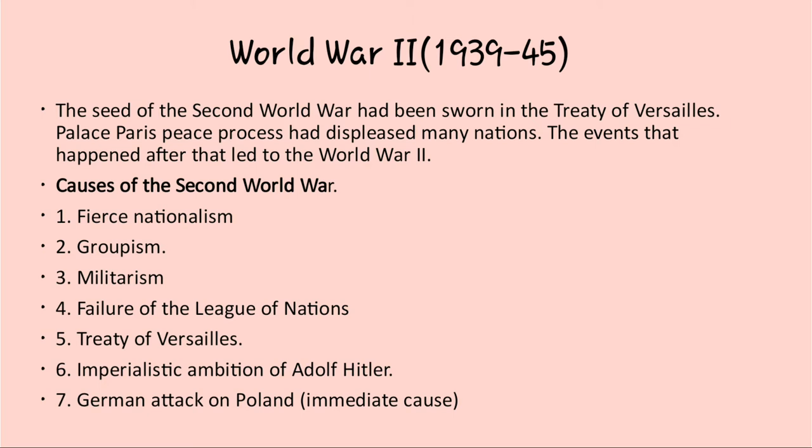The second cause is Groupism. Many countries started forming groups with other countries. For example, Italy signed treaties with Czechoslovakia, Yugoslavia, Romania, Hungary, Greece, Turkey, and Australia. Russia also signed a treaty with Germany, Turkey, Lithuania, and Iran. You also see the Rome-Berlin-Tokyo Axis group, with the support of Germany and Japan with Italy. Many treaties and alliances started forming. This is called Groupism.